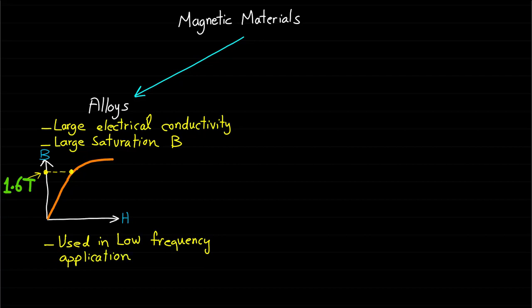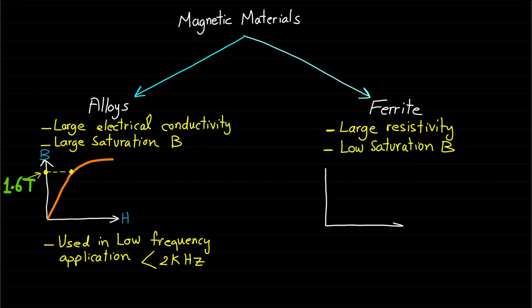Iron alloy must be laminated to reduce the eddy current loss. The second broad class of materials used for cores is ferrites. Ferrite materials are basically oxide mixture of iron and other magnetic elements. They have quite large electrical resistivity but rather low saturation magnetic field density B, typically 0.3 tesla. Ferrites have only hysteresis loss, no significant eddy current loss because of the high electrical resistivity.